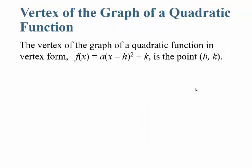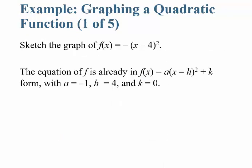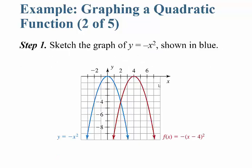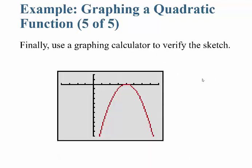One important thing to note: the vertex of the graph of a quadratic function in vertex form f of x equals a times (x minus h) squared plus k will appear at the point h comma k. Looking back at our example, h was 4 and k was 0, and we saw that the point (4, 0) was the vertex.